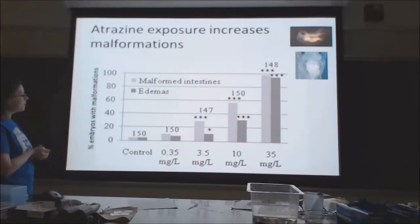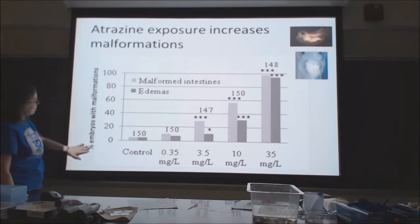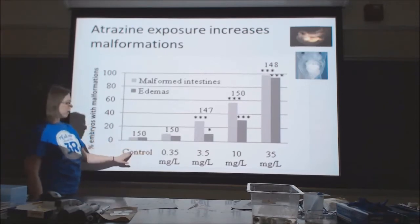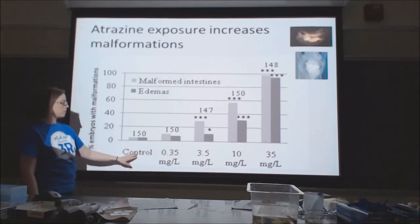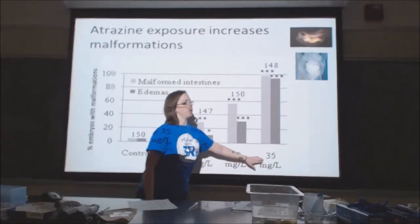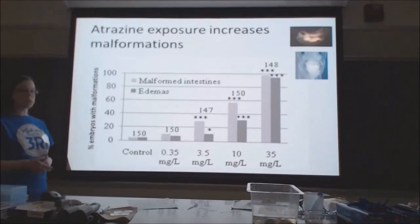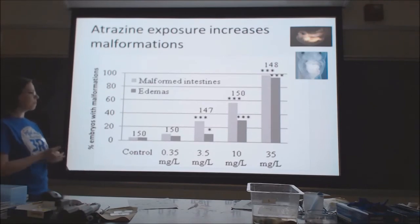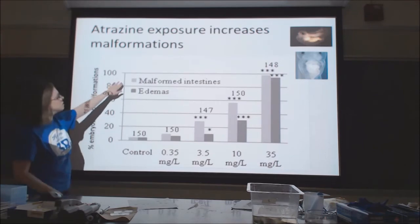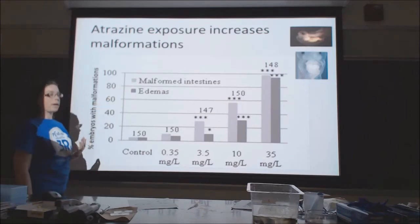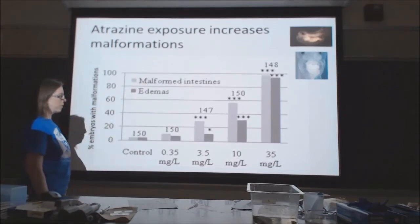Here are my data. On the y-axis is the percent of embryos counted that had certain malformations, and the number of embryos counted is indicated above each set of bars. The x-axis shows treatments: the control with no atrazine, and then a range of concentrations from 0.35 to 35 milligrams per liter. Light gray bars indicate malformed intestines; dark gray bars indicate edemas. Images of both malformations are shown in the corner.